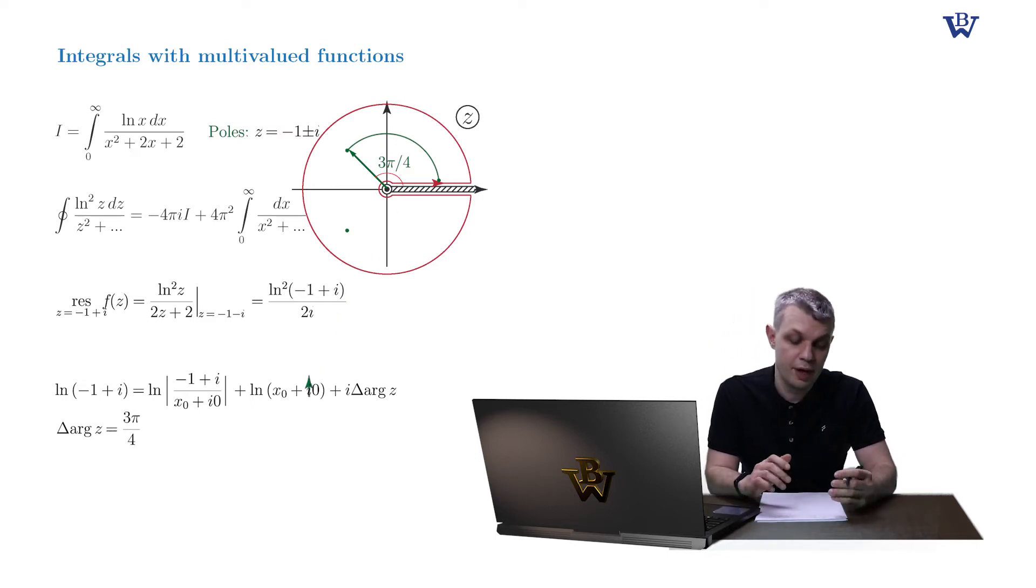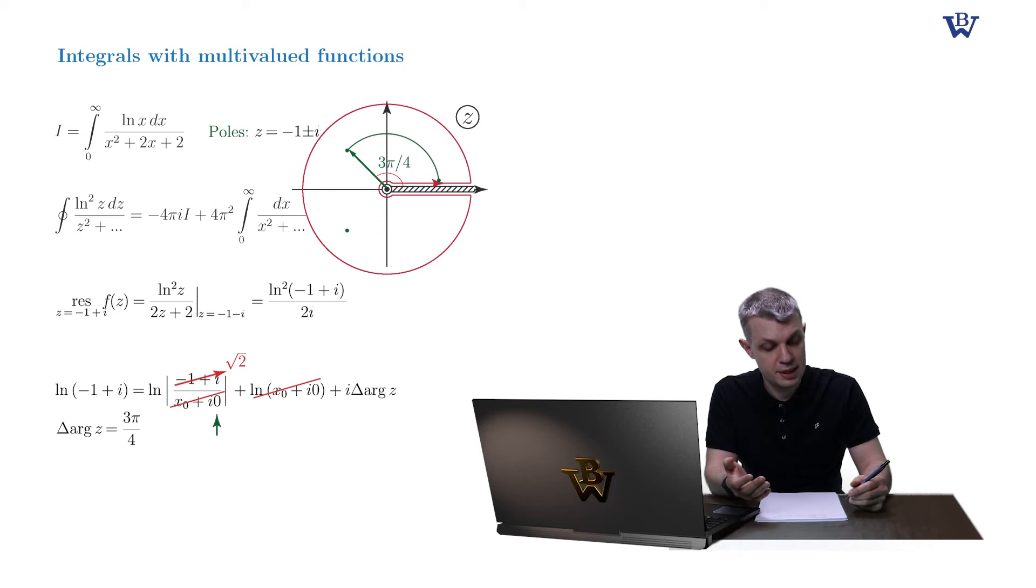Now the logarithm of x0 and the logarithm of x0 plus i0 modulus obviously cancel. And the modulus of minus 1 plus i is simply square root of 2. So we obtained the value of our log at point minus 1 plus i.